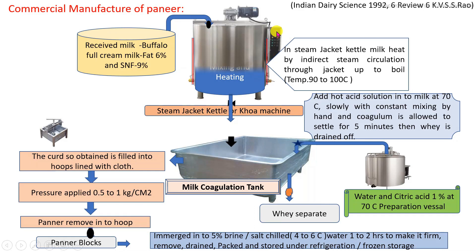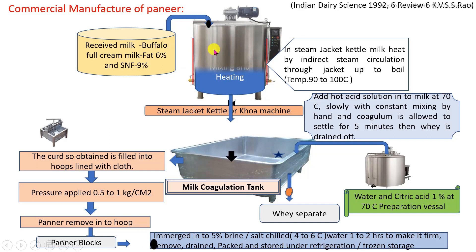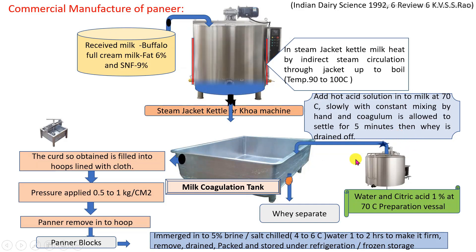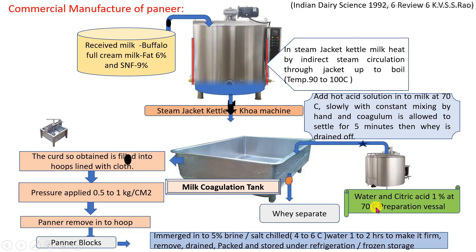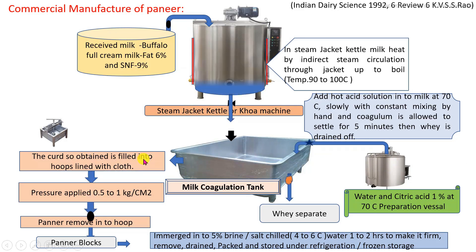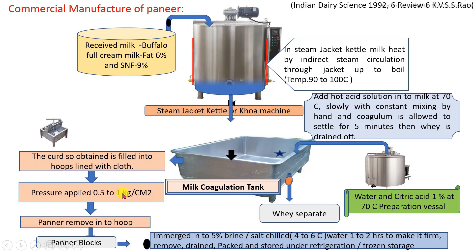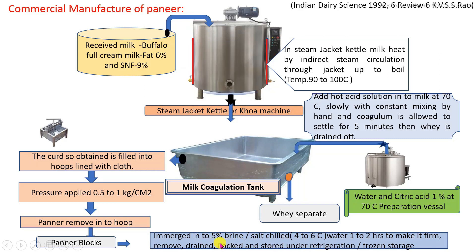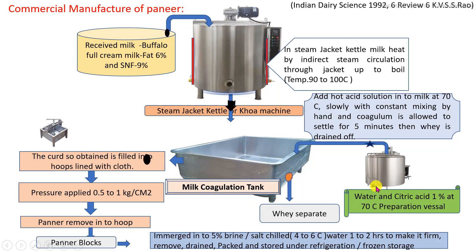The main parameters required to control are: the first CCP is proper boiling of the milk. The second CCP is preparation of the dilute organic acid solution at a minimum temperature of 70 degrees Celsius, added in proper proportion with respect to the quantity of milk. The next CCP is the pressure applied during the paneer pressing process. And finally, packaging, in which proper packaging is carried out. These are the minimum critical control points required in the paneer production process.